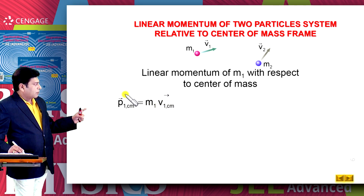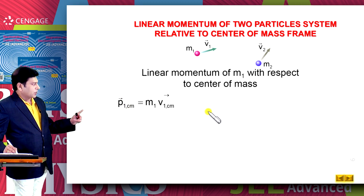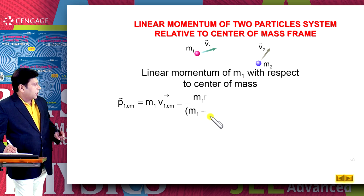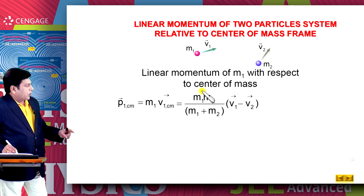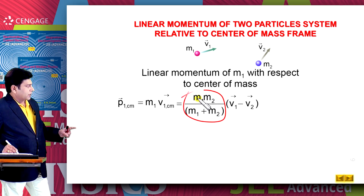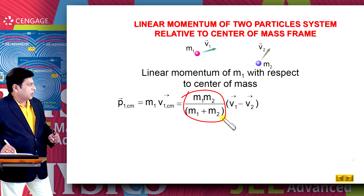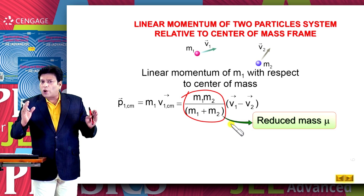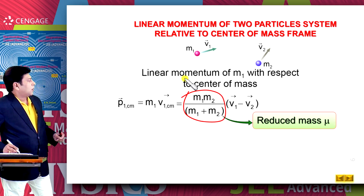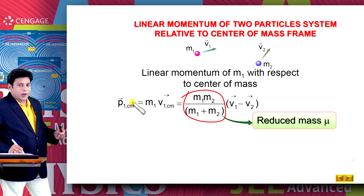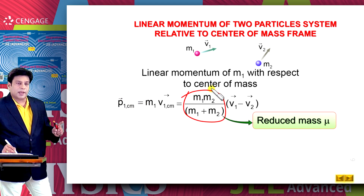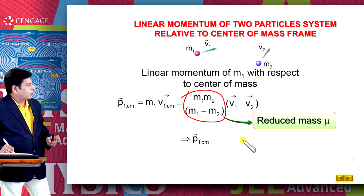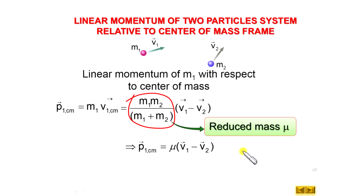The linear momentum of m1 with respect to the center of mass is p1_cm = m1 × v1_cm. Substituting, this equals m1·m2 / (m1 + m2) multiplied by (v1 − v2). We observe that m1·m2 / (m1 + m2) is called the reduced mass of the system, denoted μ. This reduced mass means we reduced a two-body problem into a single body. So we can write p1_cm = μ × v12.